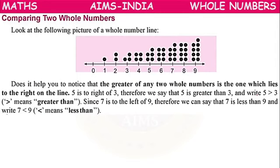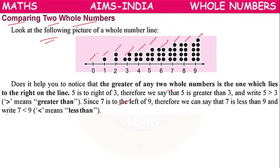Next, comparing two whole numbers. Look at the whole number line — 0, 1, 2, 3, 4, 5, 6, 7, 8, 9 represented as points. Does this help you notice the greater of any two whole numbers? The one which lies to the right on the number line will be the greatest. For example, out of 6 and 7, the number 7 is on the right, so 7 is greater.